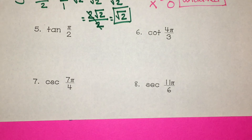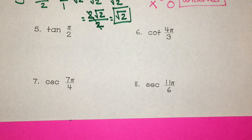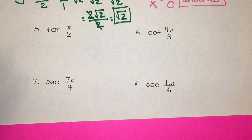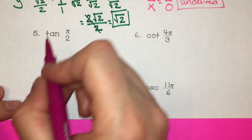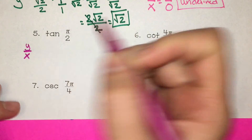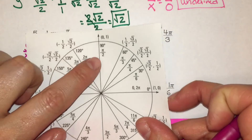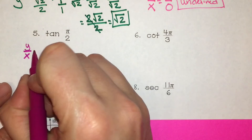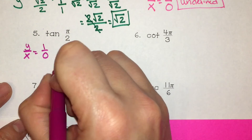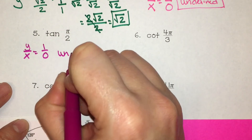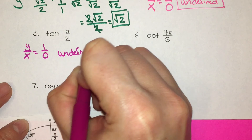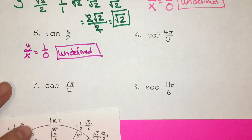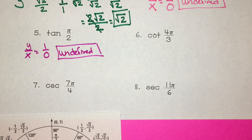Go ahead and try these four on your own, and I'll go through the answers when you're finished. Tangent is y over x, and at π over 2 the y coordinate is 1 and the x coordinate is 0, which is also undefined. You can never have 0 in the denominator.